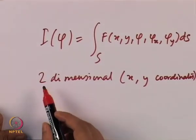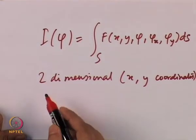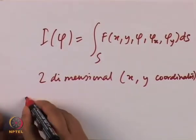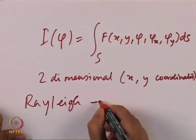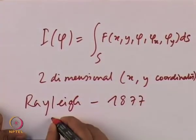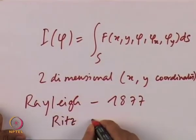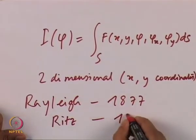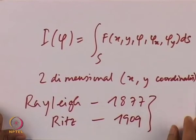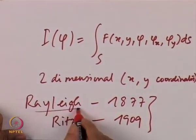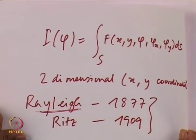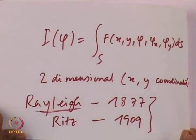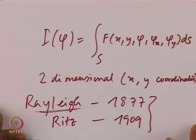We directly start with the Rayleigh-Ritz method. This method was first presented by Rayleigh in 1877, and then Ritz expanded it in 1909. Rayleigh was primarily responsible for the method and Ritz expanded it. Our objective is to minimize this integral, and we are going to start with that process now.